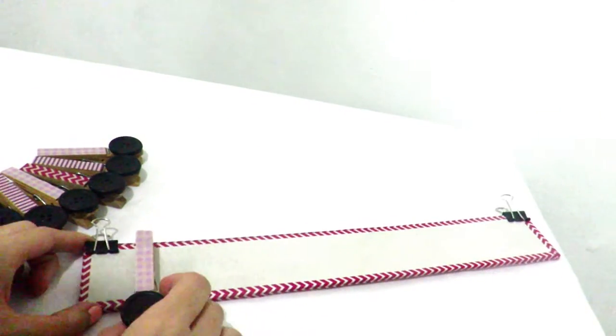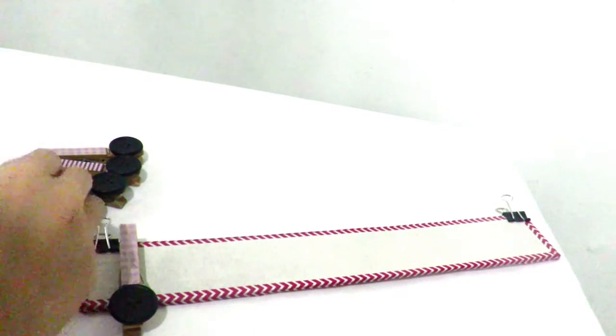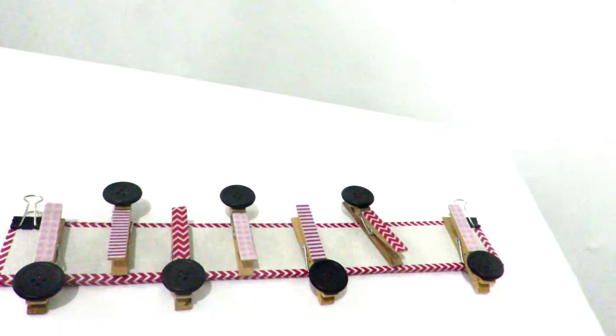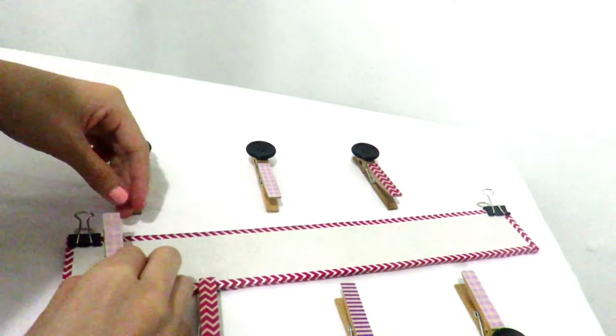Next, I lined up all my clothespins on top of my board in order to have a good look on how I want the organizer to look like. I basically decided to face every other pin in the opposite direction. I got my hot glue gun once again and secured the pins in place.